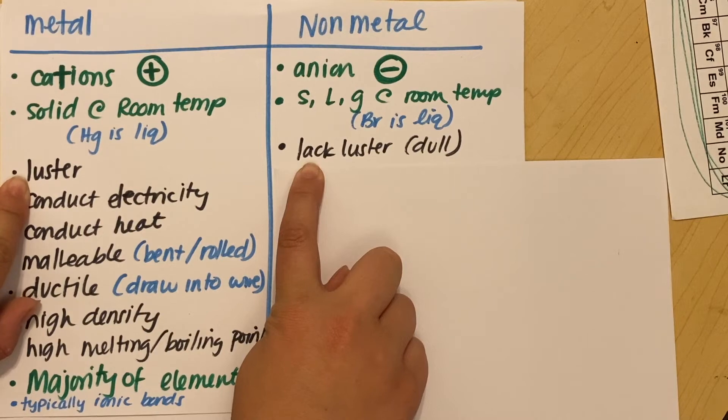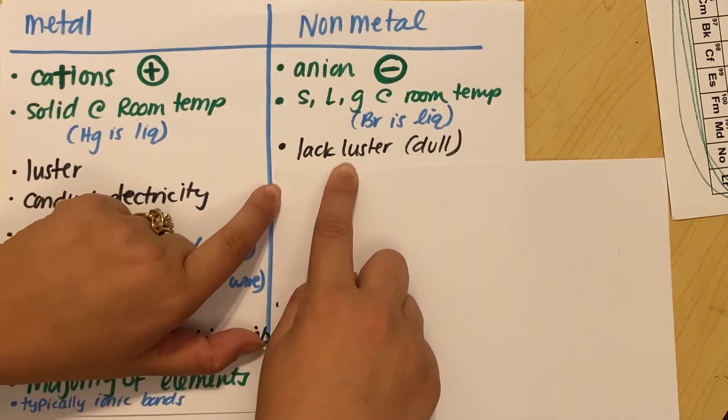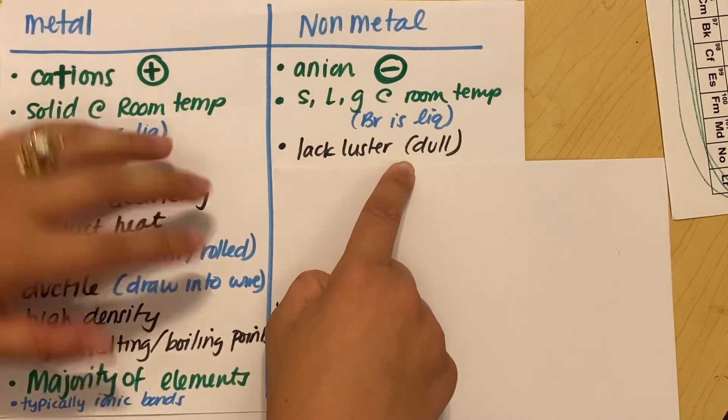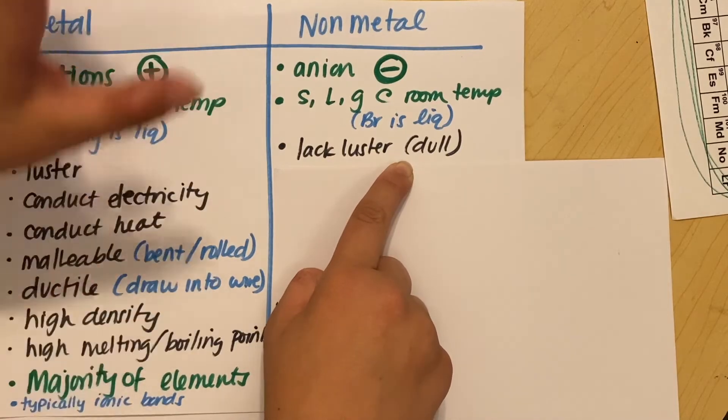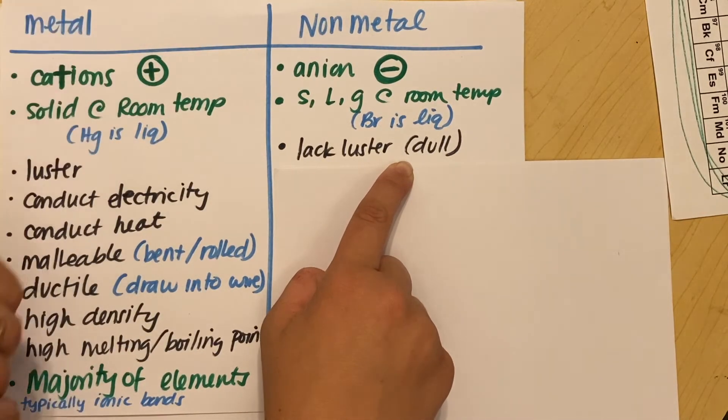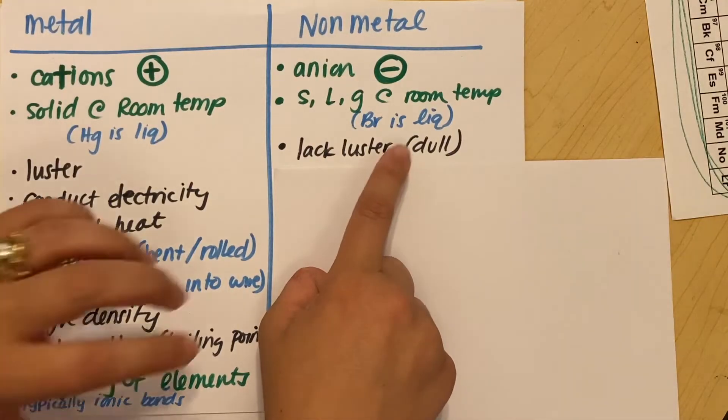And they're basically the exact opposite, again, of metals. Metals have luster. Non-metals are lackluster, which just means they're dull. Again, think about the graphite in your pencil. That's not like shiny, right? Your pencil lead is not shiny. It's very dull.